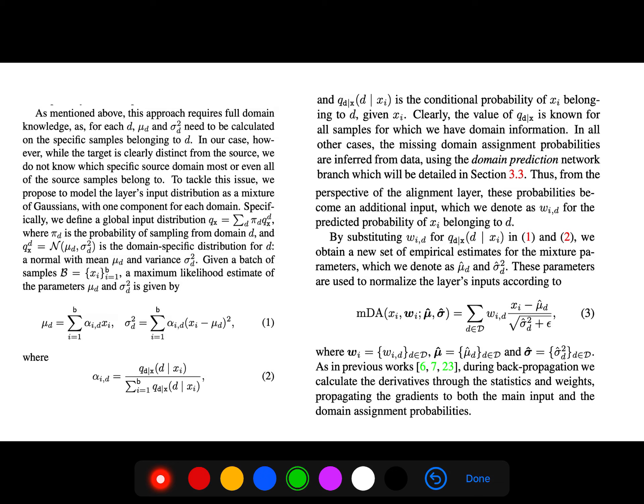So we define the global input distribution q_x, which is a linear combination of some probability of some domains. And as I said, pi_d is just the probability of sampling from d, and q_d is just a domain-specific distribution with known mean and variance. So a maximum likelihood estimate can easily give us the mean and variance.